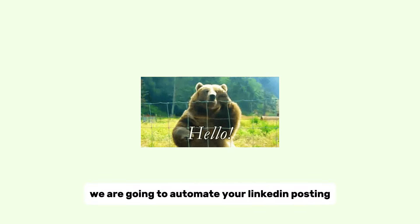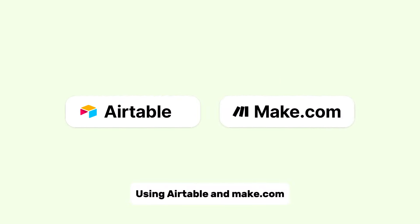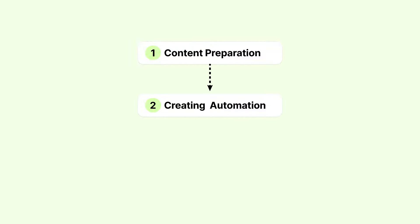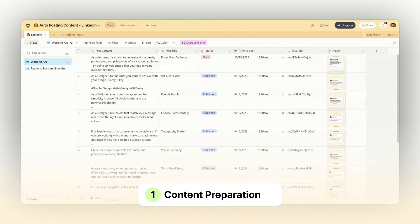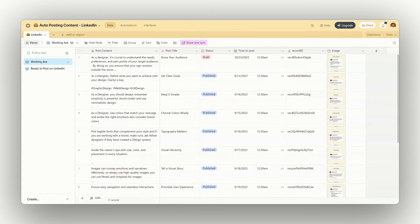Hello everyone, today we are going to automate your LinkedIn posting using Airtable and Make.com. Let's divide the process into three different steps: step one, content preparation in Airtable; step two, creating the automation in Make.com; step three, execution and monitoring. Here I have my Airtable database where I have all the content I would like to post on LinkedIn.